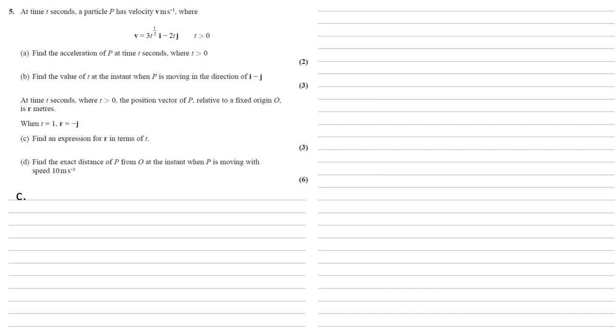At time t seconds, where t is larger than 0, the position vector of p relative to a fixed origin o is r meters. And when t equals 1, r equals minus j.